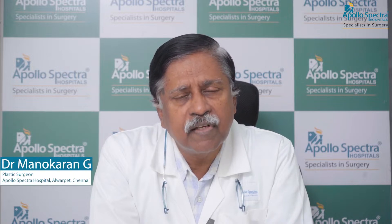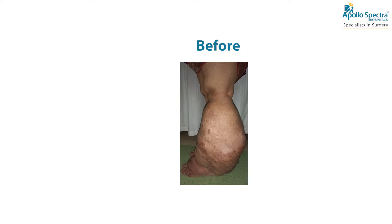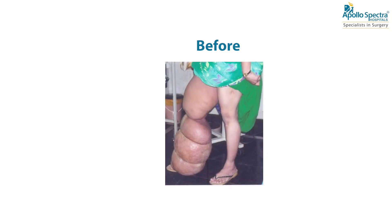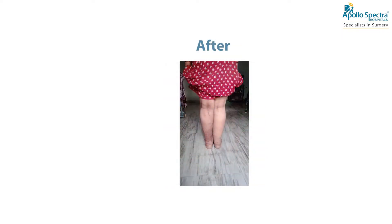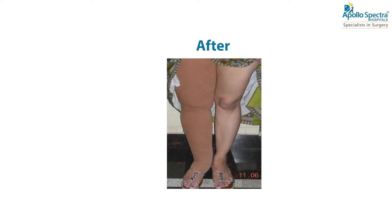For lymphatic filariasis, stage 1 and stage 2 lymphedema found in early stages is totally reversible through medical management: MLD (manual lymph drainage) and bandaging as an outpatient procedure, along with antifilarial drugs and periodic cyclical chemotherapy plus antibiotics. Penicillin or long-acting penicillin is usually the initial drug of choice.